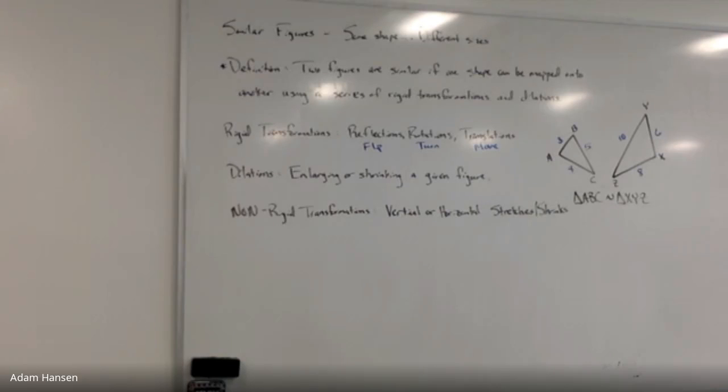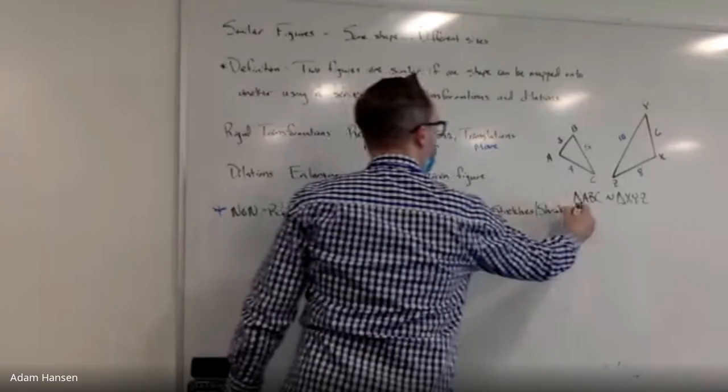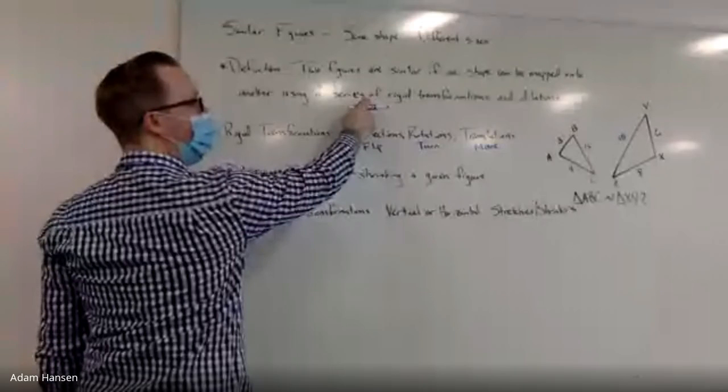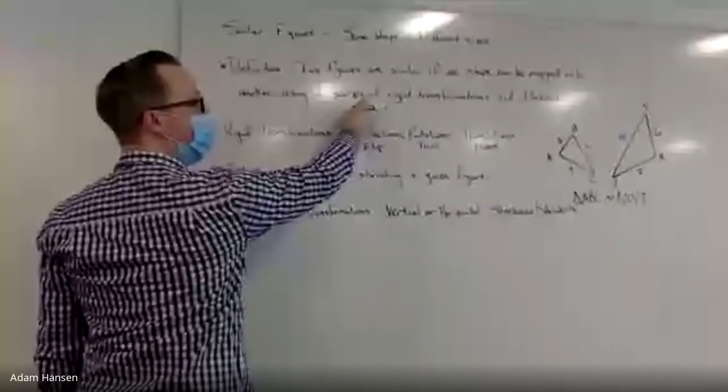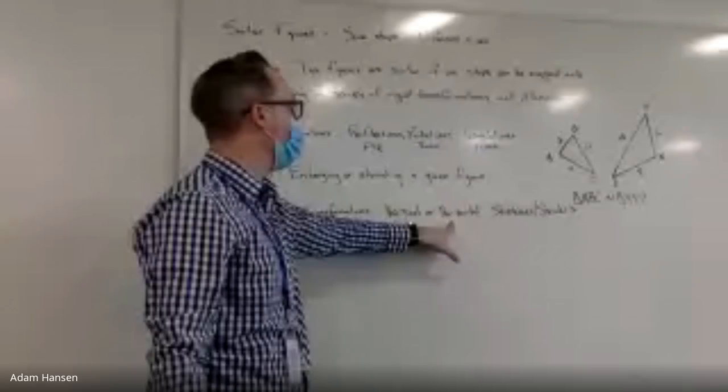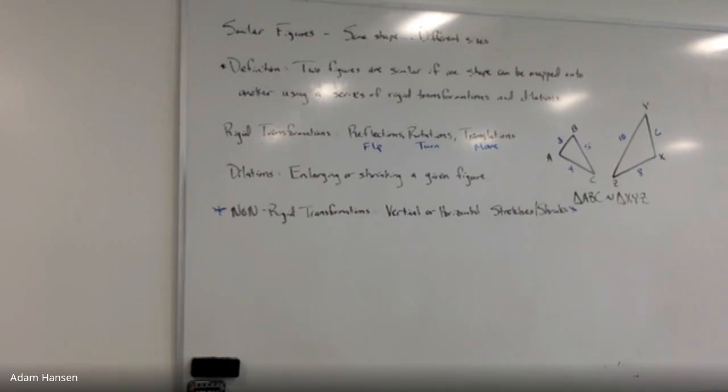That's what dilation means. You change, you multiply all sides by some scale. What is a non-rigid transformation? These are the ones that do not produce similar figures. A non-rigid transformation is a vertical or horizontal stretch or shrink. That's where I only change some of the sides. I make all the sides bigger vertically or I make the sides bigger horizontally. I don't do them both together.